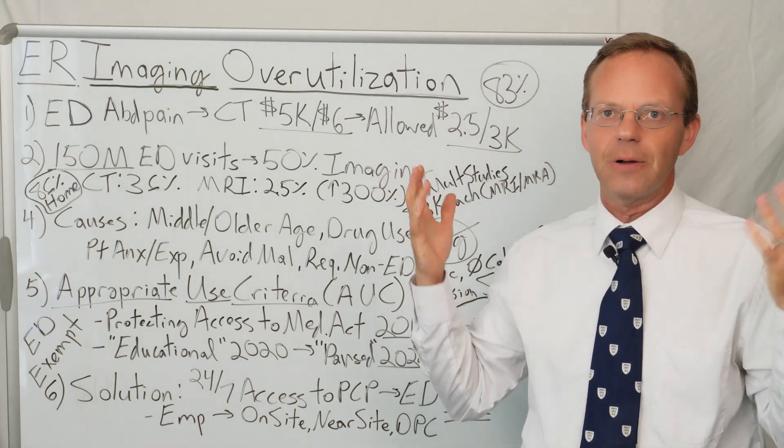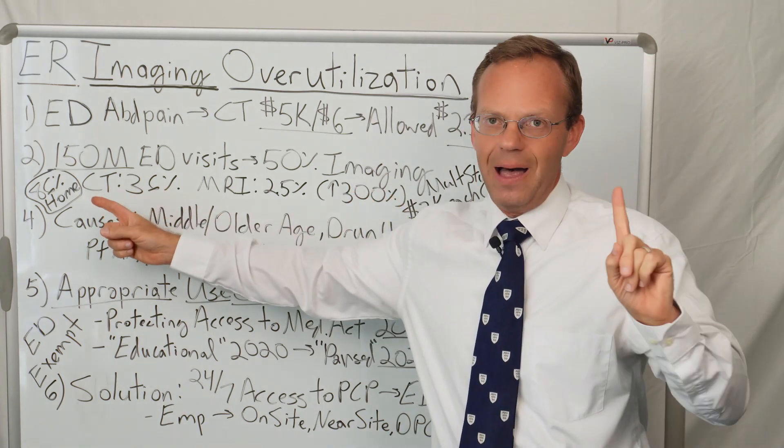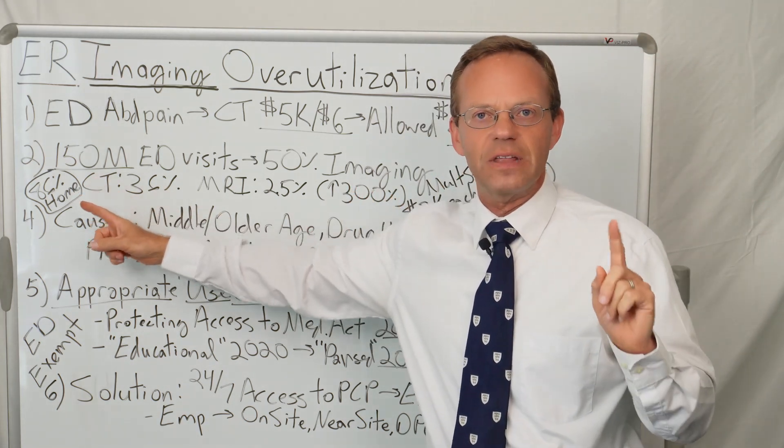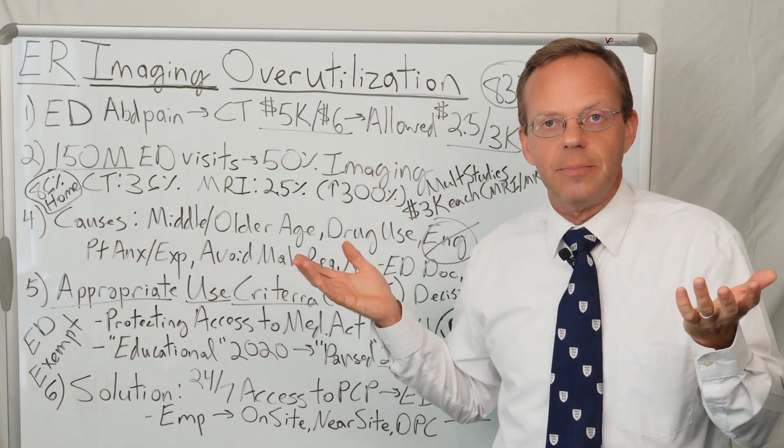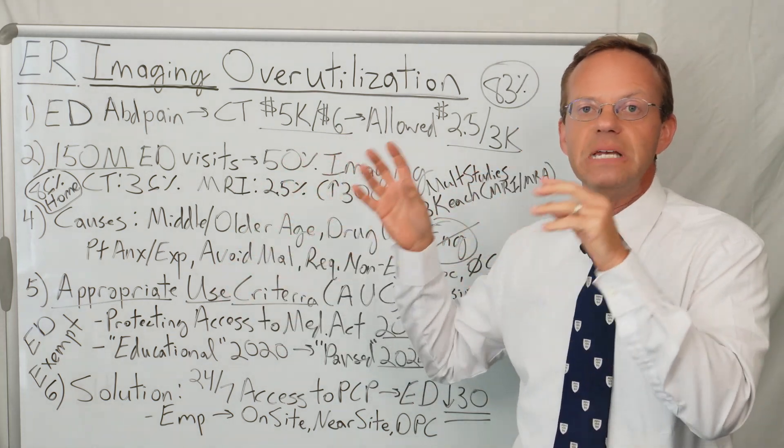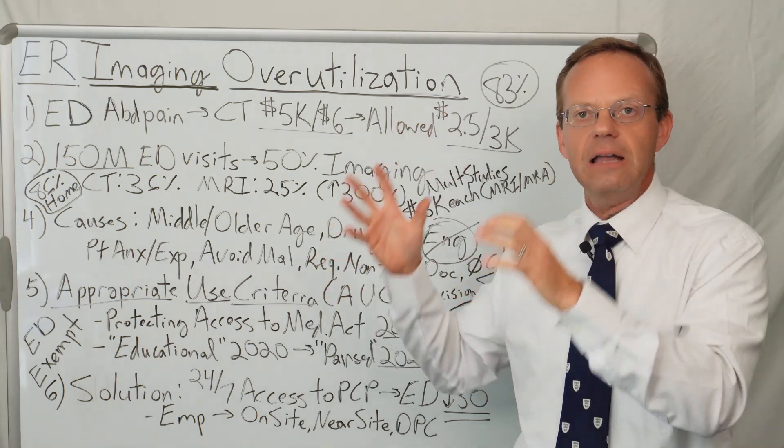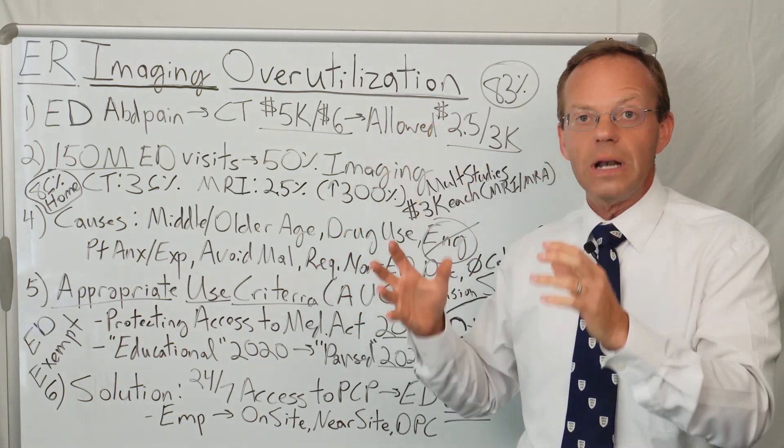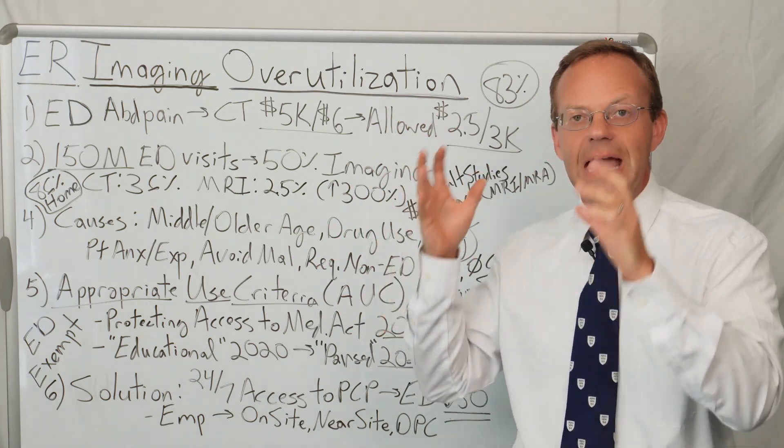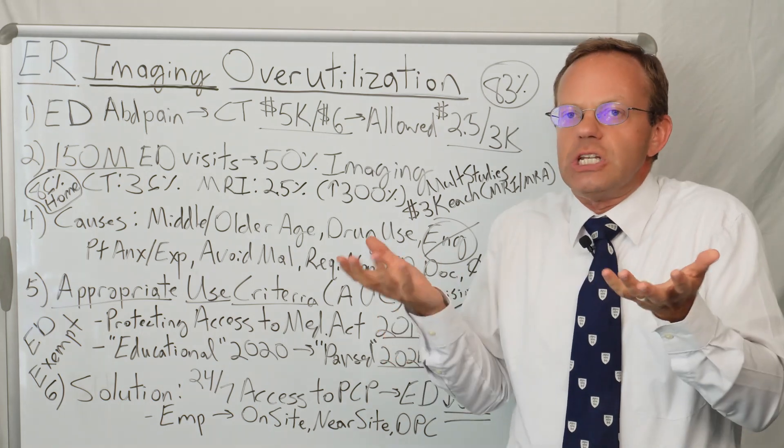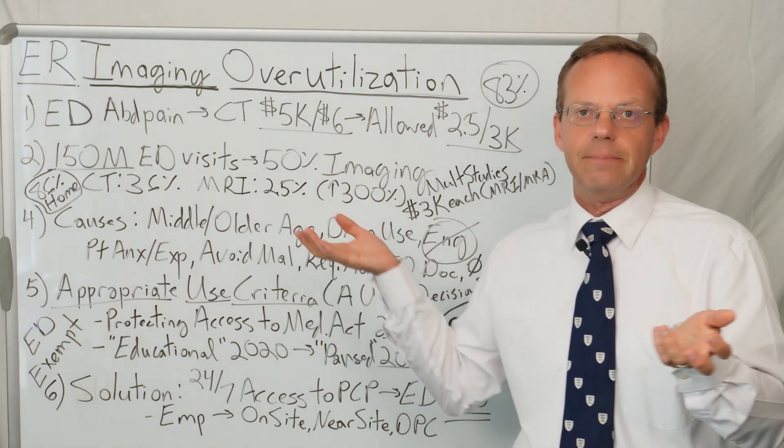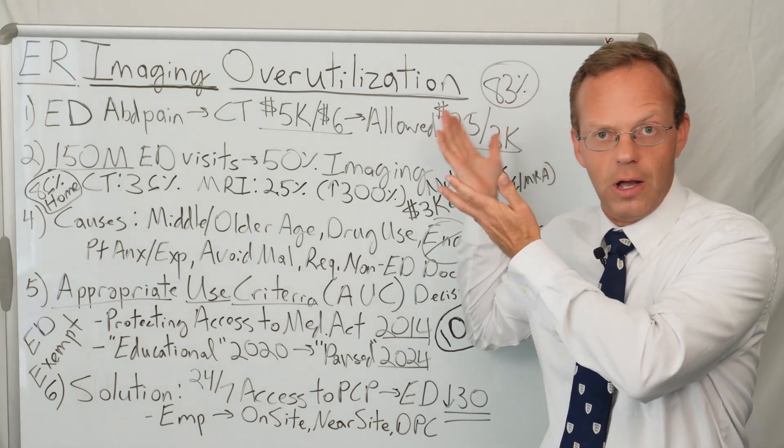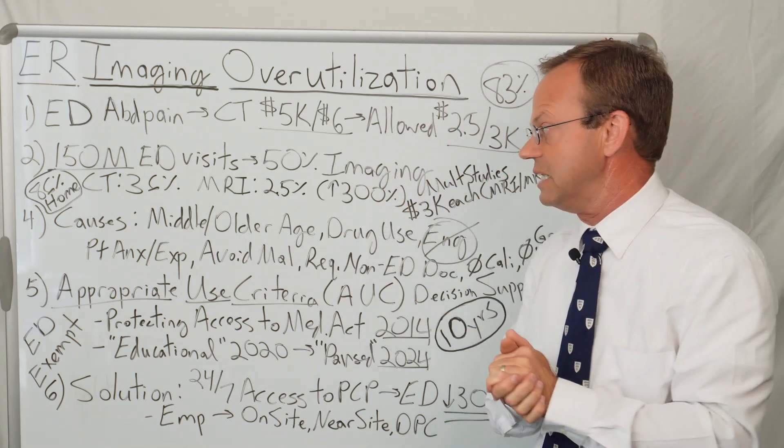By the way, keep in mind 86% of people who go to the ER, they go home. Only 14% are admitted. So basically the ER has become a high volume 24-7 advanced imaging center. They shouldn't even call it the emergency room. They should call it the 24-7 advanced imaging center, right? 83% of the cost is associated with advanced imaging.